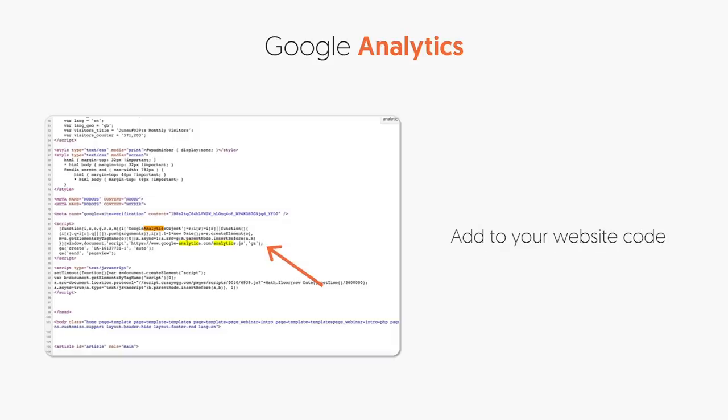Once you add it to your website, you can view it in your source code, and then over time — not right away, but within a day or two — you have to be a little bit patient. You'll end up starting to see data, and you'll start seeing it for future dates. So if you put on the code today, you're not going to see your traffic stats and data from a month ago, but you'll see it from today onward.